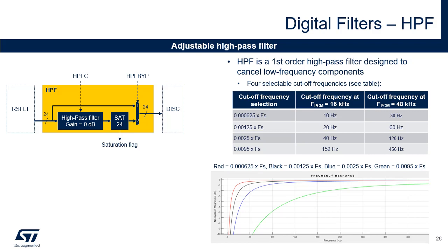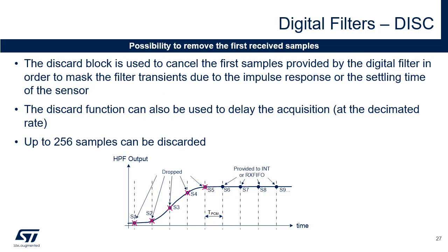HPF is a first-order high-pass filter designed to cancel low-frequency components, which can be bypassed. HPF has four selectable cut-off frequencies. The gain of the HPF is 0 decibel. The table shows some examples for audio capture at 16 and 48 kHz. The HPF output is saturated to 24 bits. The response frequency for the four cut-off frequencies is plotted in the chart. MDF offers the possibility to program the number of samples to be discarded after each restart. The discard block allows the first samples provided by the digital filter to be discarded in order to mask the filter transients due to the impulse response or settling time of the sensor.